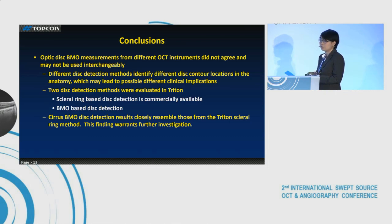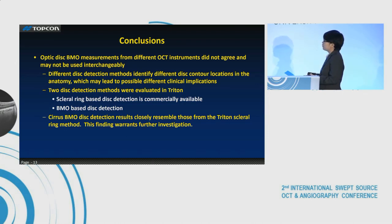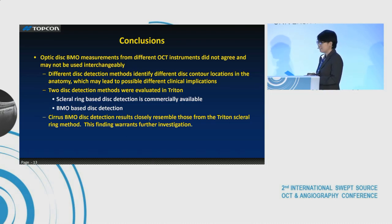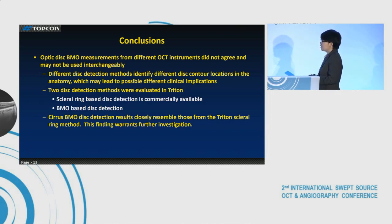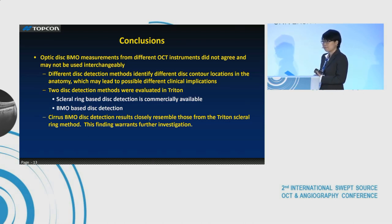For this study, we draw the following conclusions. The optic disc BMO measurements from different OCT instruments did not agree and may not be used interchangeably. Different disc detection methods identify different disc contour locations in the anatomy, which may lead to different clinical implications. Two disc detection methods are evaluated in Trident: the scleral ring-based disc detection, which is commercially available, and the BMO-based disc detection, which is still under development. Cirrus has one disc detection method, which is BMO-based, and their results closely resemble those from the Trident scleral ring method. We will further investigate these findings.